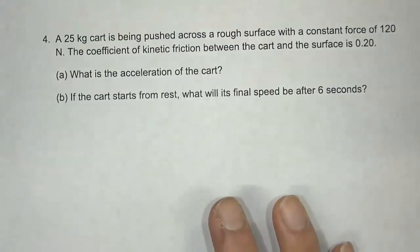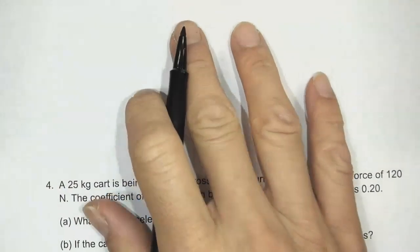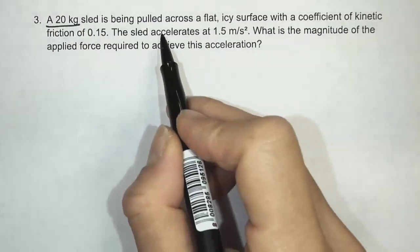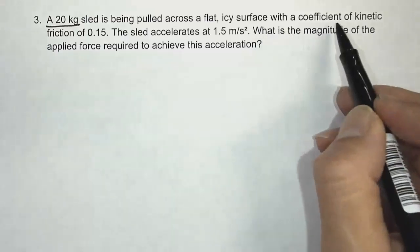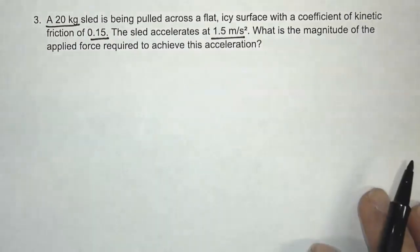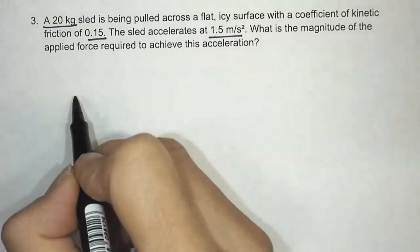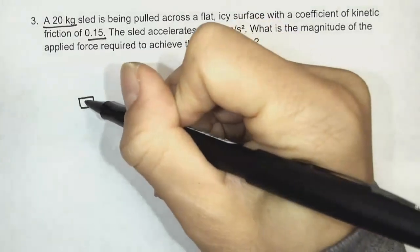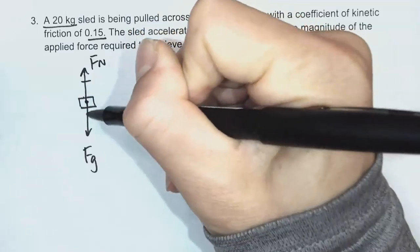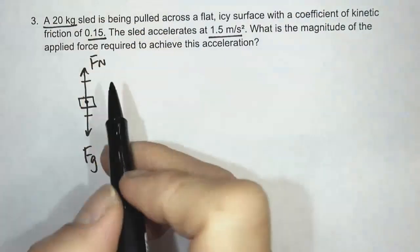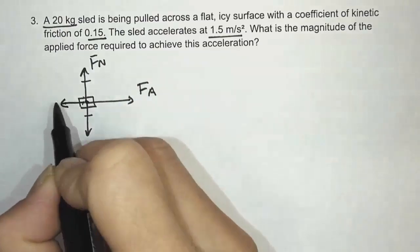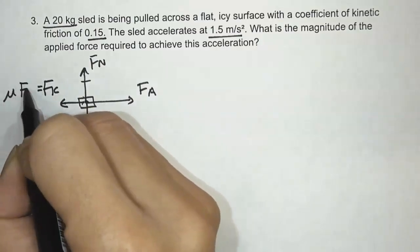Let's take a look at another question. This question is a little different because we're looking for the applied force. A 20 kilogram sled is pulled across a flat, icy surface with a coefficient of kinetic friction of 0.15. The sled accelerates at 1.5 meters per second squared. What is the magnitude of the applied force required to achieve this acceleration? Once again, we're going to do our force diagram. We have Fg, Fn — these are balanced since there's no vertical acceleration — a force to the right (what we're looking for), and kinetic friction to the left, equal to mu times Fn.